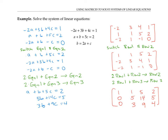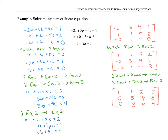Now I've eliminated the variable a from the second and third equations. Next, I'd like to use one of these two equations to eliminate variable b. Since neither equation has a coefficient of one in front of b, I'll use the second equation and make it have a coefficient of one by multiplying it by one fifth. So I'll take equation two, multiply it by one fifth, and replace equation two with that, giving me b plus 14 fifths c equals one. Of course, I can do the same thing on the matrix side by taking one fifth of row two and replacing row two with it.